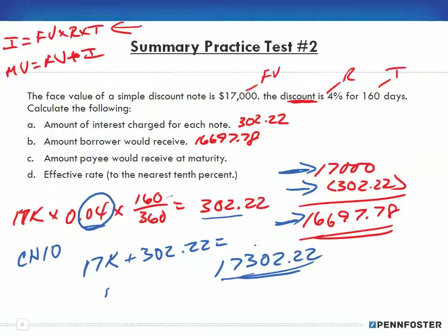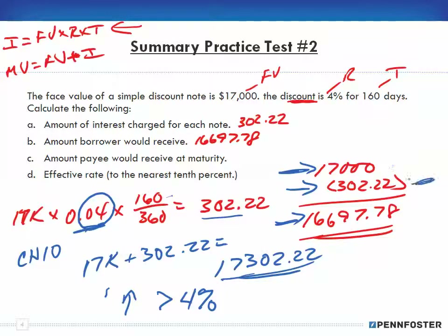By doing it like this, even though we're using a 4% interest rate, the effective rate actually goes up — meaning it's greater than 4% — which is what the bank or lender is going to get back. Because they're taking the $302.22 right up front and keeping that for themselves. So the effective rate ends up being greater, and we're going to calculate that so you'll be able to see it.